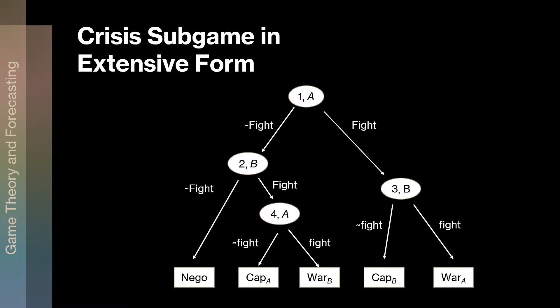Getting back to node number four: here A chooses not to fight, but B has chosen at node two to fight. At node four, A has to decide what to do. The lowercase 'fight' notation means you're choosing to fight after already being attacked. If A chooses not to fight, it capitulates — cap A. Or if A chooses to fight, it fights a war started by B — war B. That is the crisis sub game in extensive form.